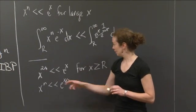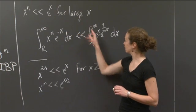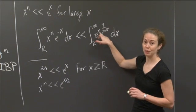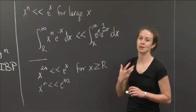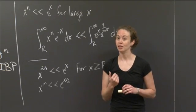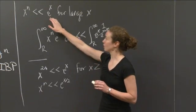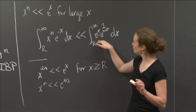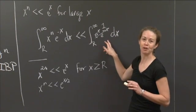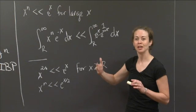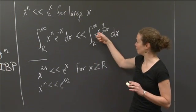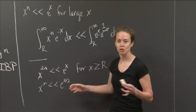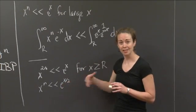The problem with using e to the x as the comparison was that e to the x times e to the minus x gave you 1. But if I use e to the x over 2, I'm going to end up with e to the minus something, and that's good because that's going to converge. So if you tried e to the x first and saw it didn't work, you could say: the problem is I canceled off all the e to the minus power, which is what I want to keep around. I should have something like the square root of e to the x, i.e., e to the x over 2.